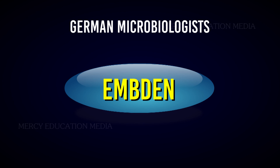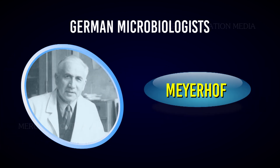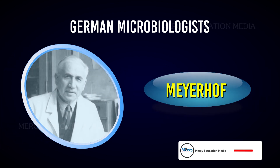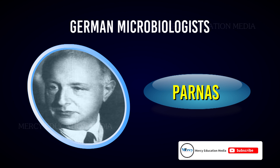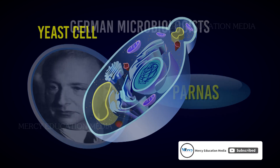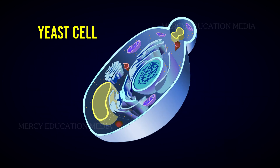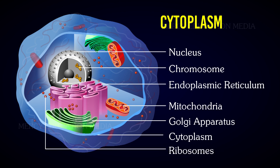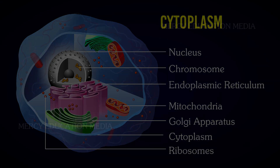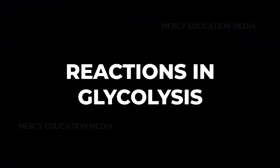Three German microbiologists, namely Emden, Mayerhoff, and Parnas, first demonstrated this process in yeast cells. Hence it is otherwise known as the EMP pathway. It occurs in the cytoplasm and is common to all organisms.